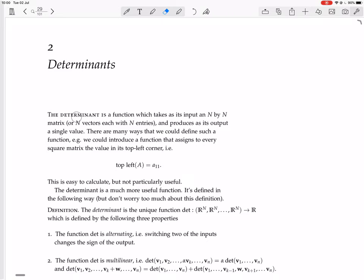The determinant is a function which takes as its input an n by n matrix, or n vectors each with n entries. An n by n matrix can be considered as n column vectors, so it's a square matrix. It takes a square matrix and produces a single value output, giving you a single number.